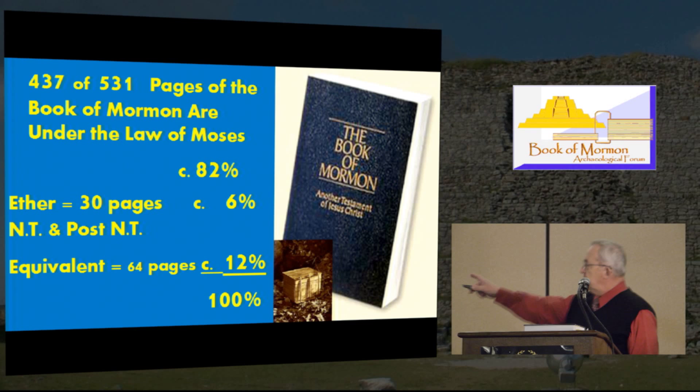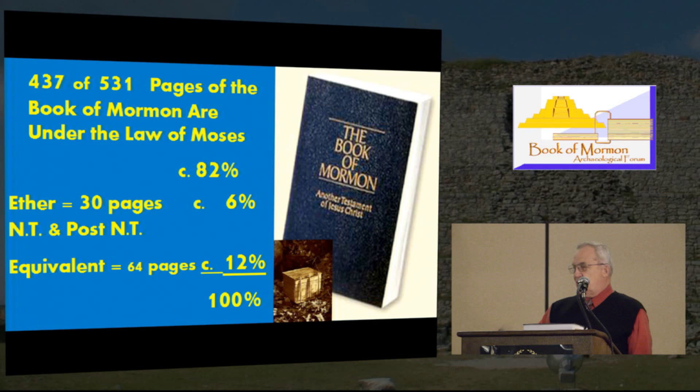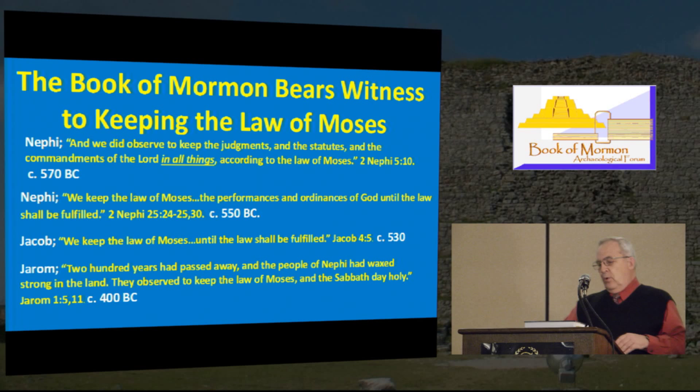There are 437 pages of the Book of Mormon that are all under the law of Moses — about 82% of the Book of Mormon. If you take out the 30 pages of the Book of Ether, which is Jaredite time, then you're going to have closer to maybe 88% of the Book of Mormon under the law of Moses. Very, very significant.